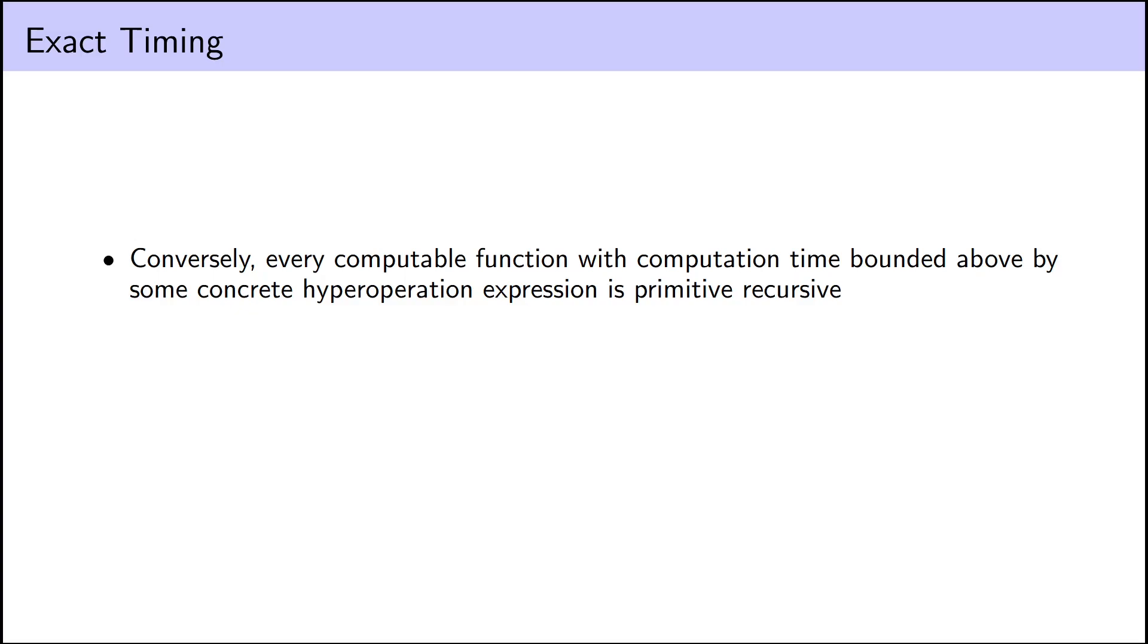Conversely, and this is the really cool result, this time bounding result is exact, not the value bounding result. You can do lots of wild things with functions that output just zeros and ones, but every computable function with computation time bounded above by some concrete hyperoperation expression is primitive recursive. To show this, we just write a program in our primitive recursive language that first calculates that upper bound. Concrete hyperoperation expressions are, as we've seen, primitive recursive.